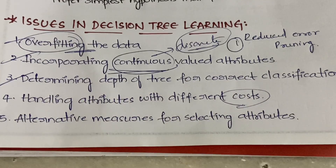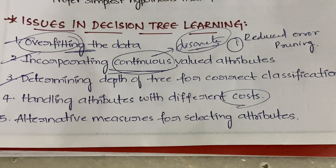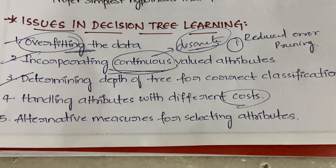The fifth and last issue is the lack of alternative measures for selecting attributes. You have to calculate information gain and entropy — there is no other alternative to doing these calculations. Also, you are giving more importance to the target attribute by considering only its information gain, which leads to biasing.